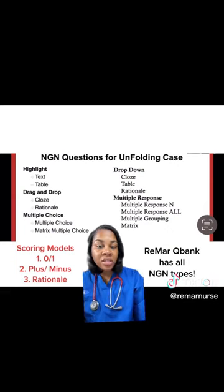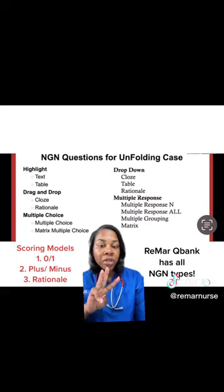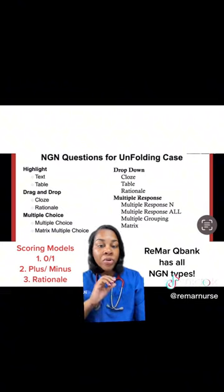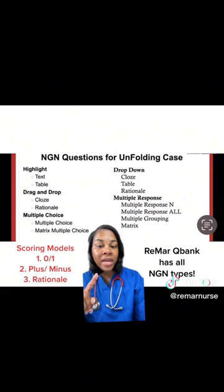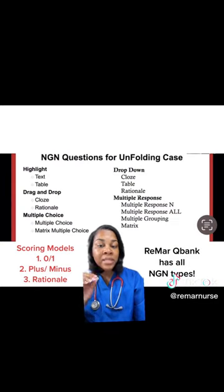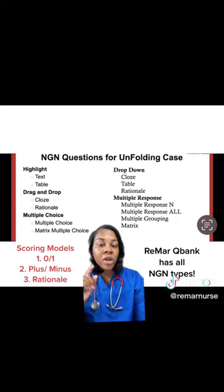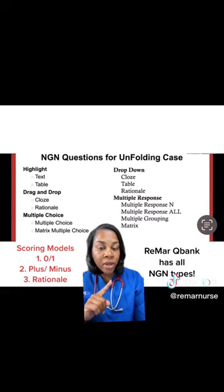These question types will follow one of the three scoring models. Either the 0-1, where you get one point for every correct answer with no penalty for incorrect answers. Plus/minus is the one you guys are having questions about — you get one point for a correct answer, and you lose a point for an incorrect answer.